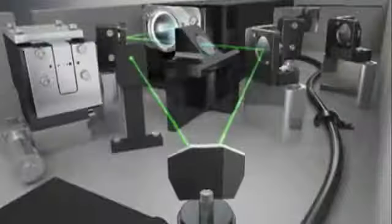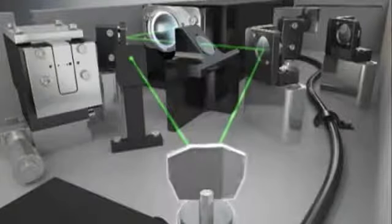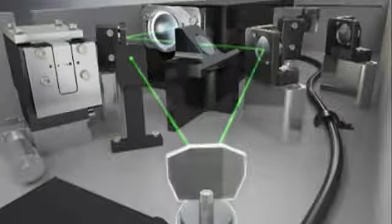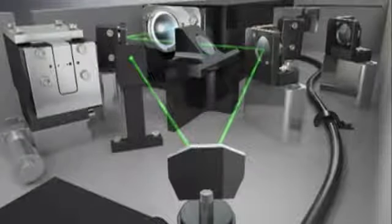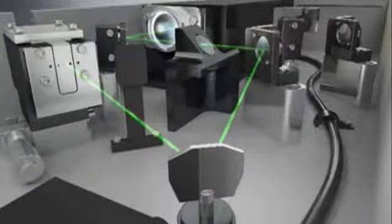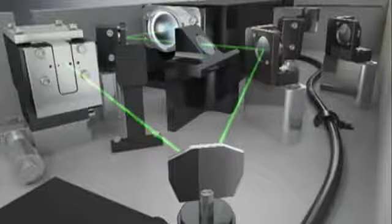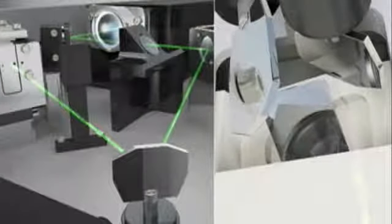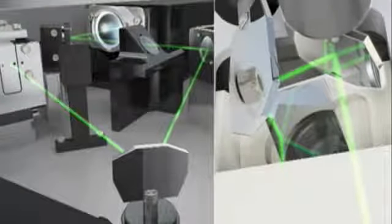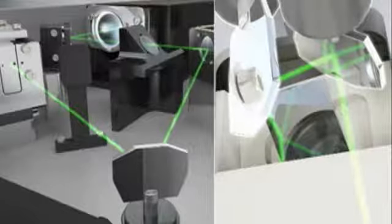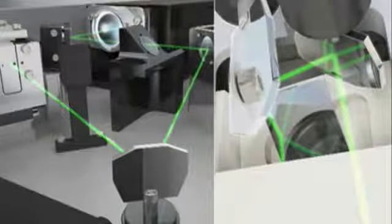PASCAL's laser fires a continuous beam at the first high-speed galvo, located in the laser console. A mirror on this galvo momentarily directs the beam into a fiber-optic cable to create a pulse. This pulse travels through the fiber-optic cable to the slit lamp, where PASCAL uses two additional galvo mirrors to deliver the pulse from the fiber to the retina.